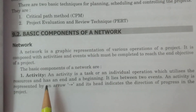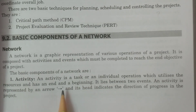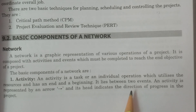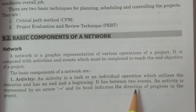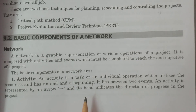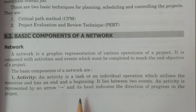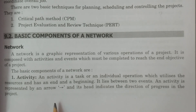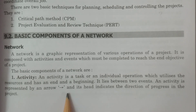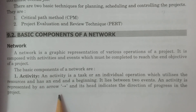What is meant by an activity? An activity is a task or an individual operation which utilizes some resources, and which has a beginning and an end — that is, it lies in between two events. An activity is represented by an arrow mark, which indicates the direction and progress of the project.